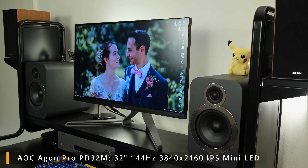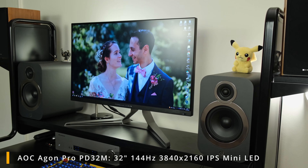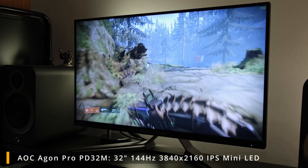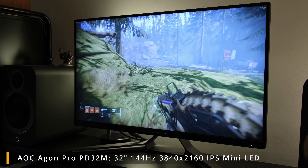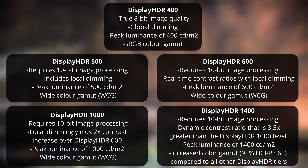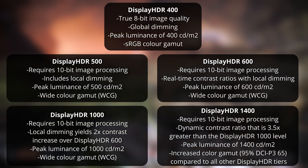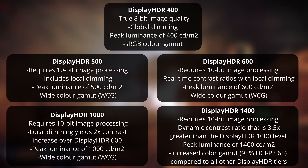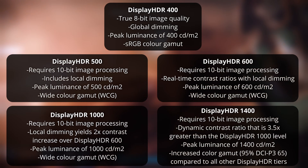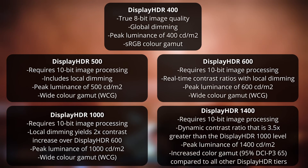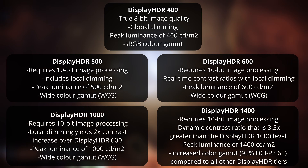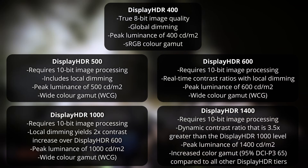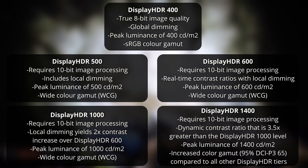At the top of the Display HDR certification — at least at the time of filming — is Display HDR 1400, present on the Porsche Design AOC Agon Pro PD32M. This provides a peak luminance of 1400 nits or above, a dynamic contrast ratio three and a half times greater than Display HDR 1000, and an increased color gamut with 95% coverage of the DCI-P3 color gamut. Effectively, Display HDR 1400 is the best of the best.